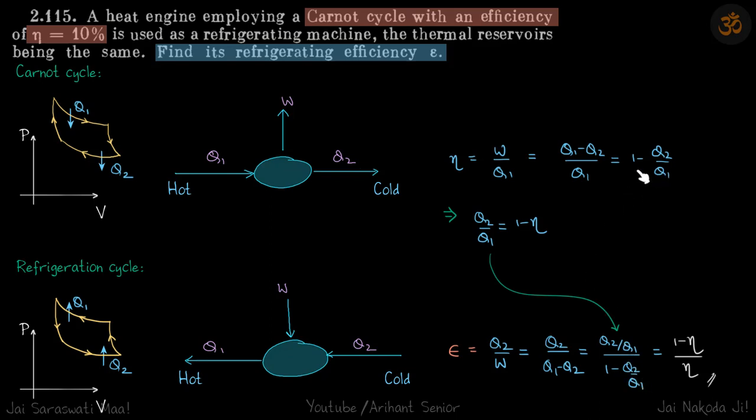From the earlier equation, we can find Q2 by Q1, which is 1 minus η. We just put that value here, and we get our answer: the efficiency of this cycle is 1 minus η by η.